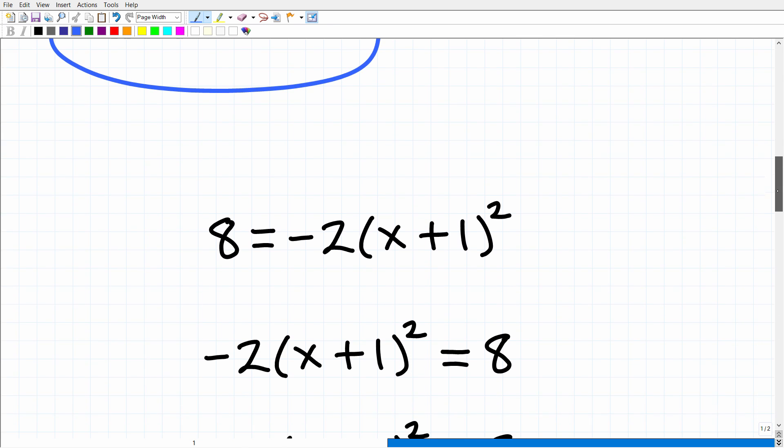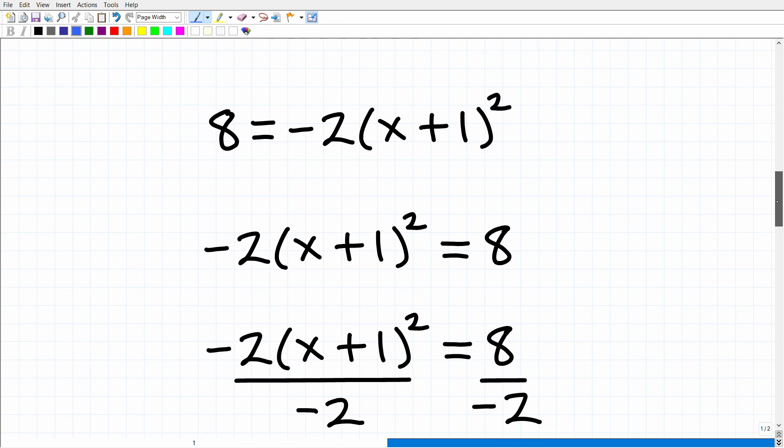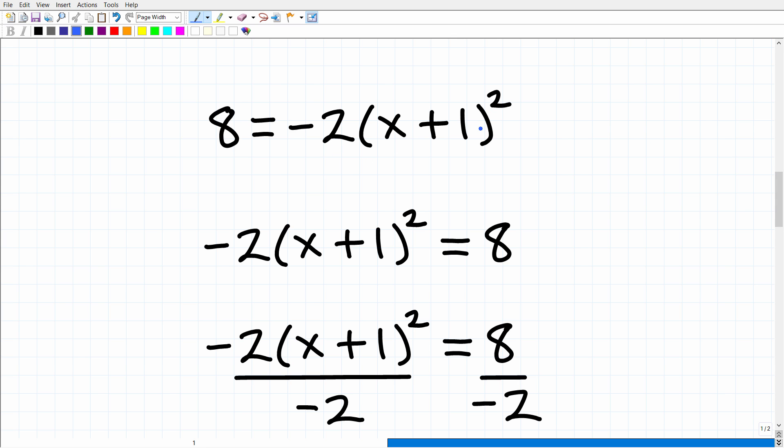Okay, so 8 equals negative 2 times (x + 1) squared. What's the best approach to solve this problem? Well, the best approach is to divide both sides of the equation by negative 2 so we can isolate this part of the equation, (x + 1) squared. Now, you could expand this, take x + 1 and square it, multiply it by itself, and then distribute into negative 2. But that is kind of like taking the long path to solve this problem.